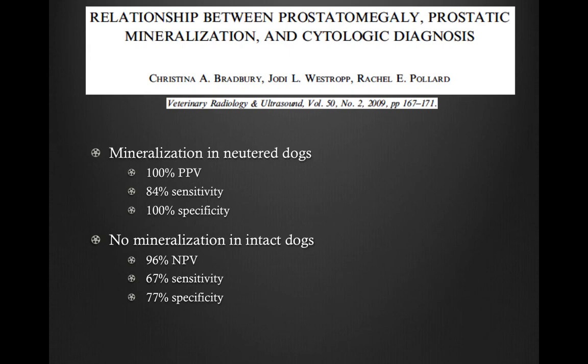It's slightly different in intact dogs. In intact dogs without mineralization, there was a 96% negative predictive value, 67% sensitivity, and 77% specificity for not being cancer. However, intact dogs can develop mineralization within their prostate from non-cancerous diseases, such as chronic prostatitis or other processes causing dystrophic mineralization. So if you have a neutered dog and see mineral, be highly concerned for cancer. If you have an intact dog without mineral, put cancer lower on your list — but if you do see mineral, don't automatically assume it is cancer in an intact dog.